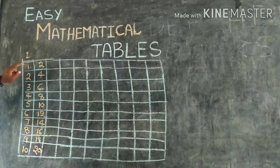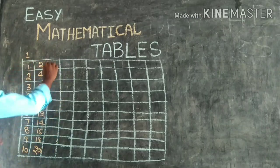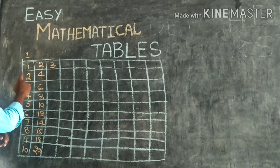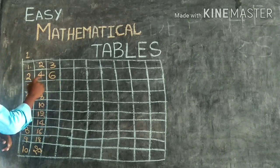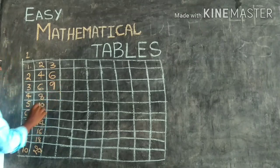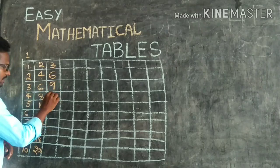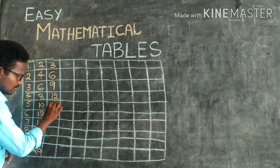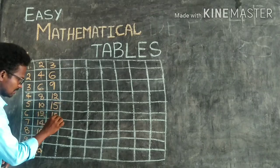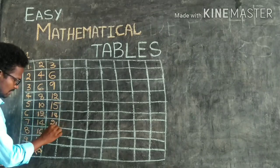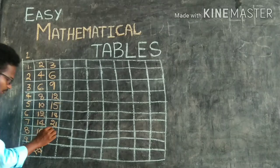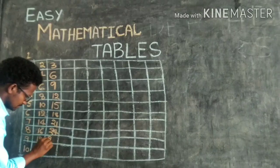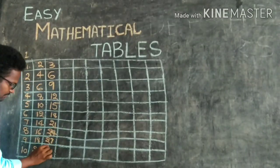Coming to the 3rd table. 1st box, 2nd, 3rd, 4th, 5th, 6th, 7th, 8th, 9th, 10th, 11th, 12th, 13th, 14th, 15th, 16th, 17th, 18th, 19th, 20th, 21st, 22nd, 23rd, 24th, 25th, 26th, 27th, 28th, 29th, 30th.